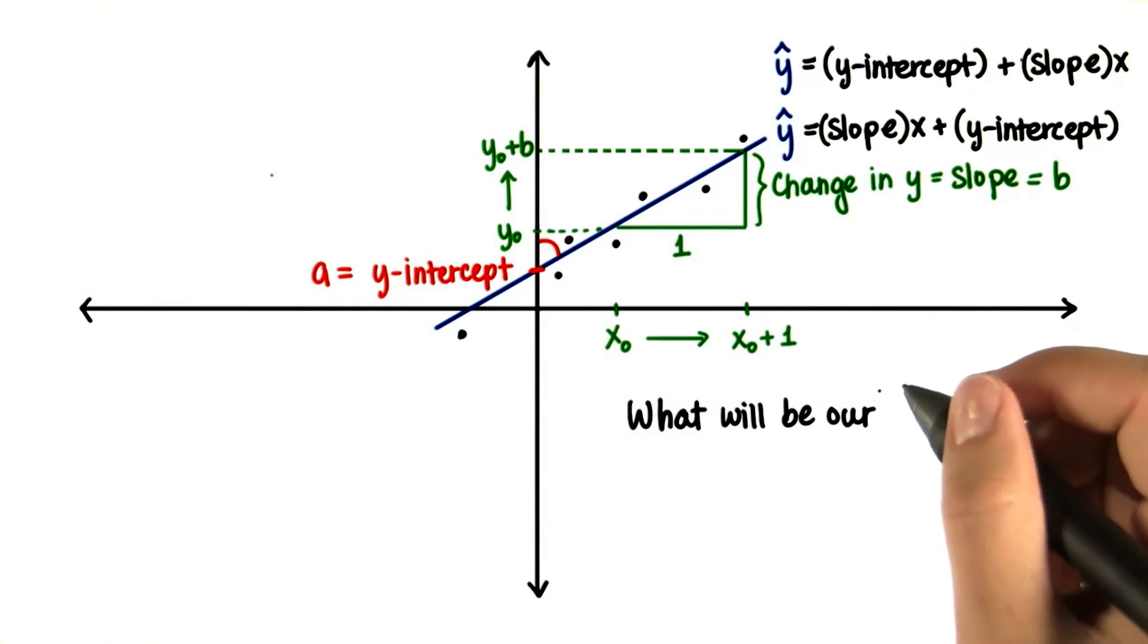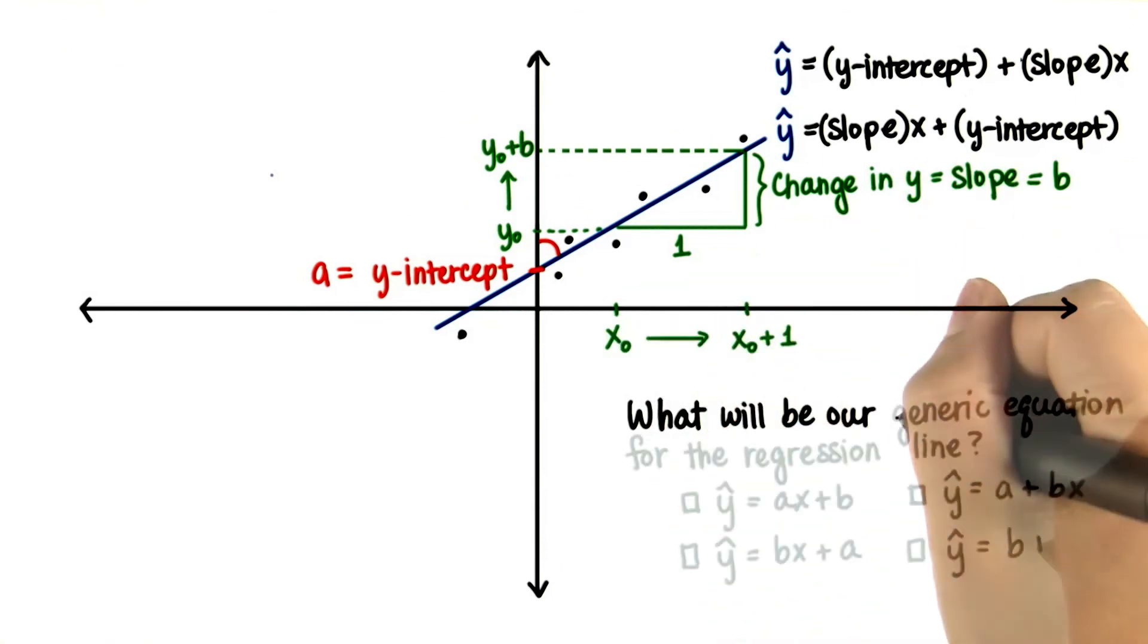Given this, what will be our generic equation for the regression line? Select all that apply.